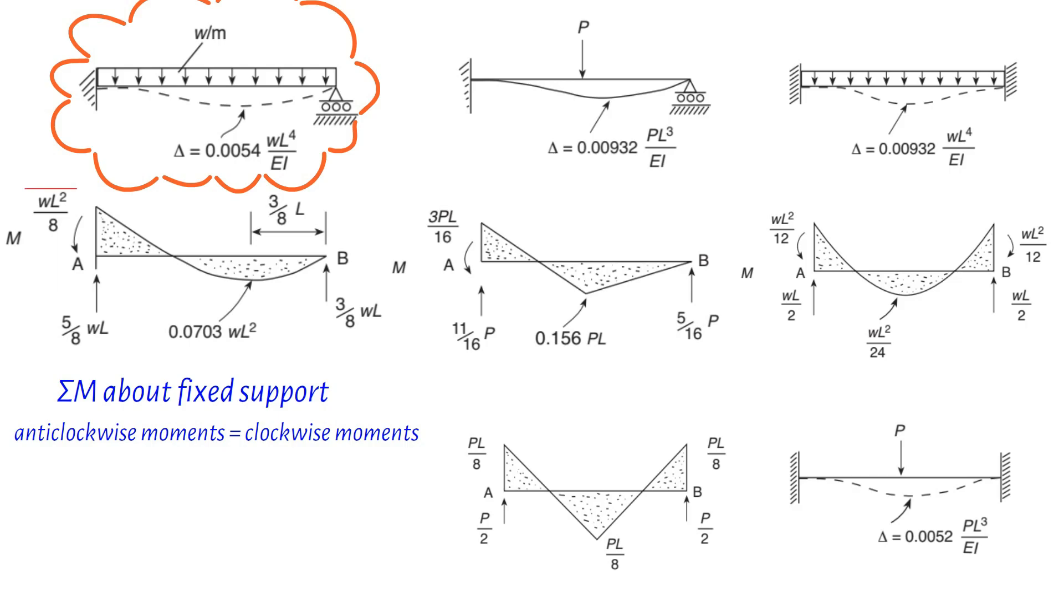Assuming a given support moment of the product of the distributed load W and the square of the beam length L divided by 8, we can solve the equation of moments about the fixed support to determine the end-support reaction Rb. The calculated value for Rb is found to be 3 times the product of the distributed load W and the beam length L divided by 8.